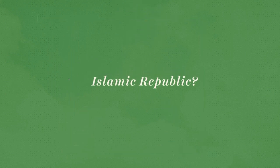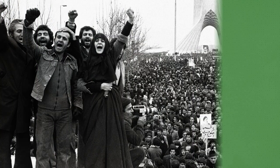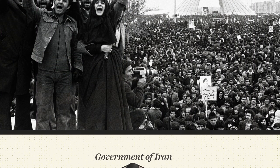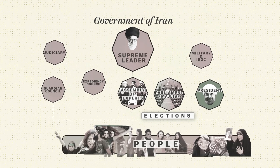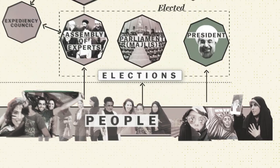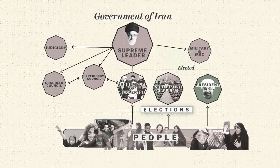How can a country's government be both theocratic and representative? Iran's revolutionary leaders didn't really know the answer either, and they never agreed, so they ended up creating a government that has these two systems mashed together. Some parts are elected, some are unelected, and they're all tangled together in this kind of mess.